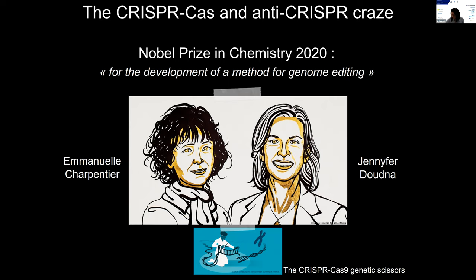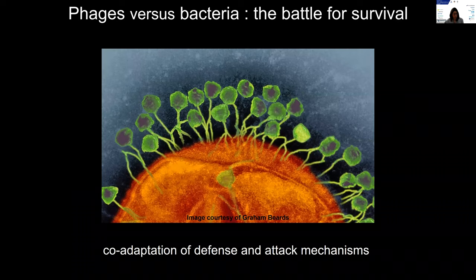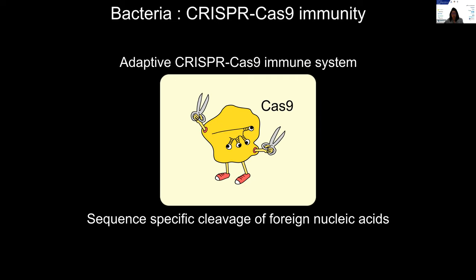Behind these impressive technological advances, there is a story of battle for survival between phages, which are the most abundant biological entities on Earth, and bacteria, with an evolutionary arms race and correlated adaptations of their defense and attack mechanisms. From the bacterial side, bacteria have evolved an arsenal of antiviral tools, including the CRISPR-Cas9 immunity, which acts by cleaving foreign nucleic acids — the invading DNA — in a sequence-specific manner.